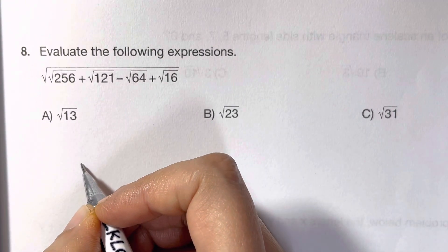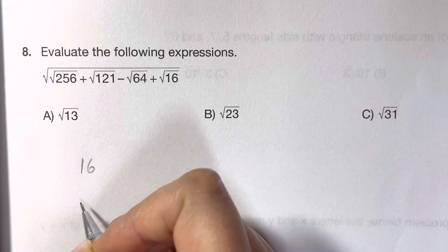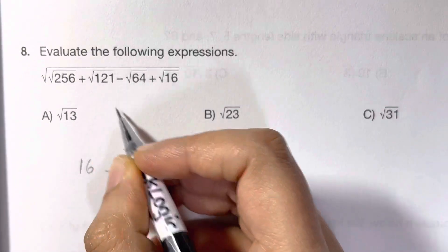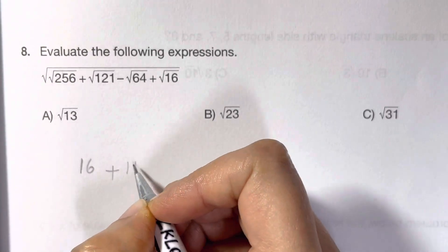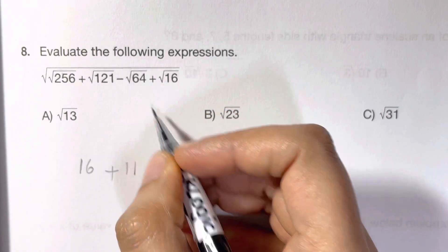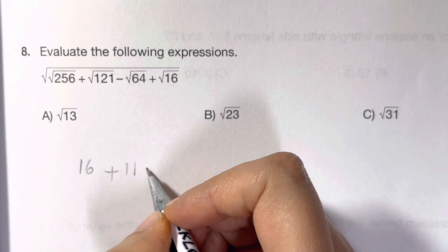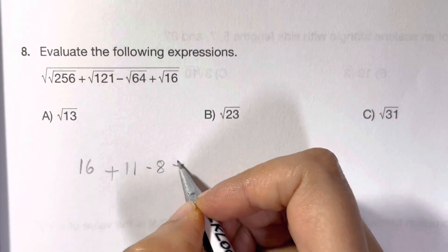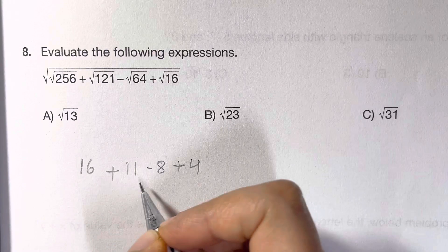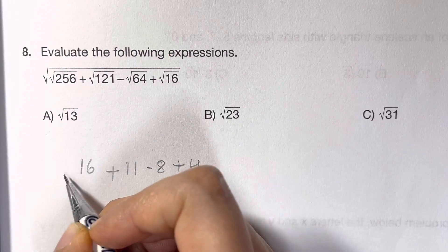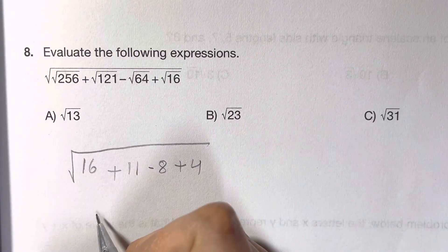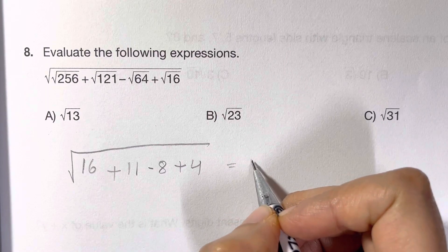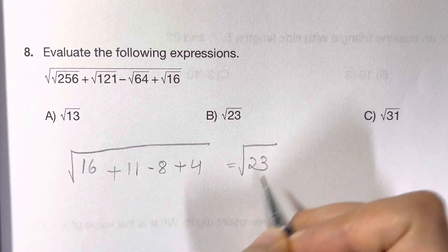Square root of 256 is 16, plus square root of 121 is 11, minus square root of 64 is 8, plus square root of 16 is 4. 16 plus 11 minus 8 plus 4 is under root, so that's equal to square root of 23, and that's your answer choice B.